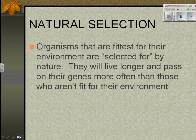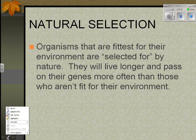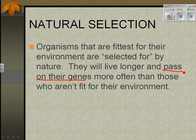Here's the theory of natural selection in a nutshell: organisms that are fittest for their environment are selected for by nature. They will live longer and pass on their genes more often than those that aren't. You may have heard this called survival of the fittest.